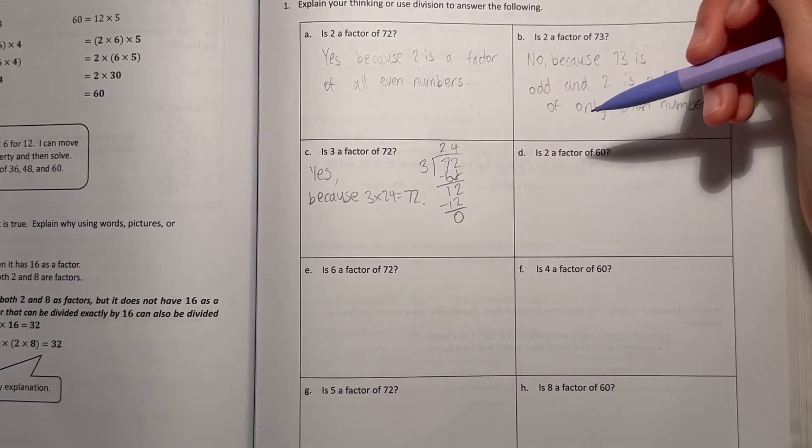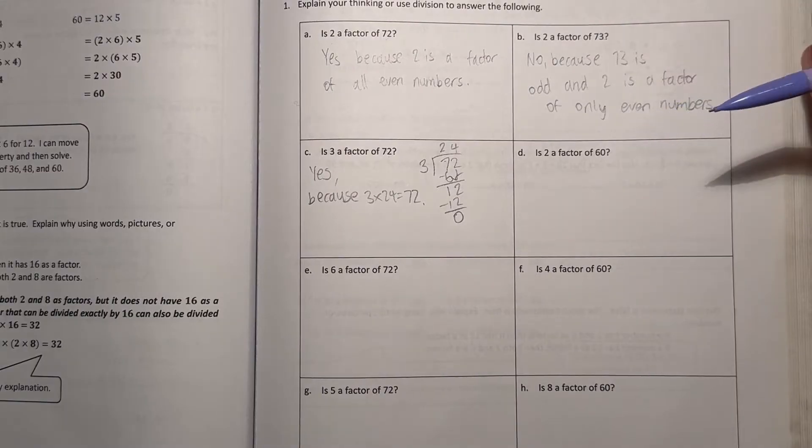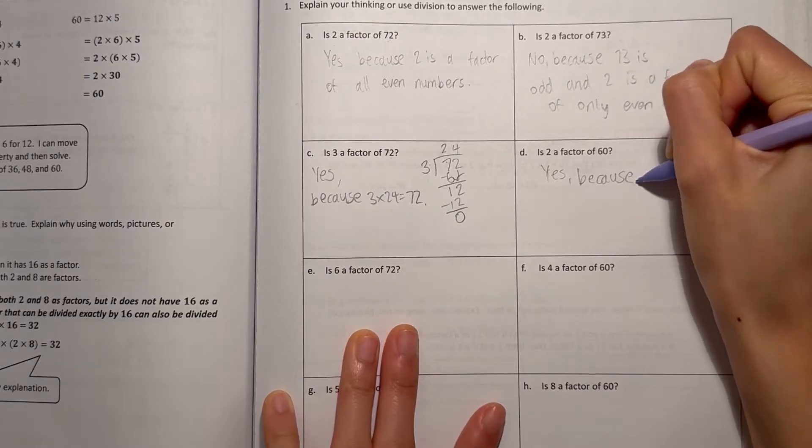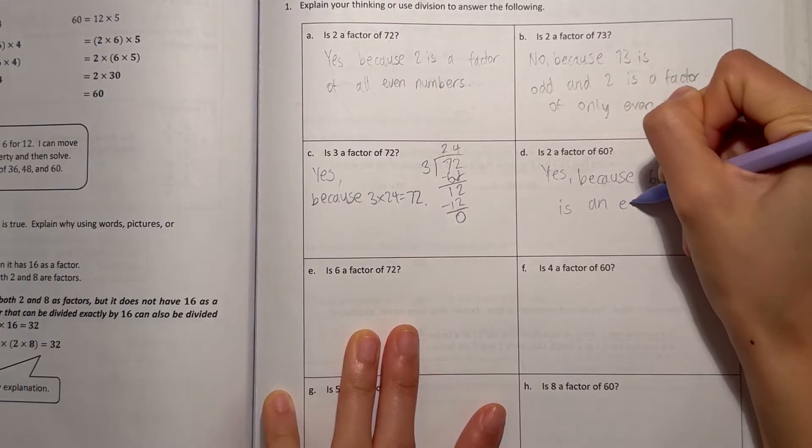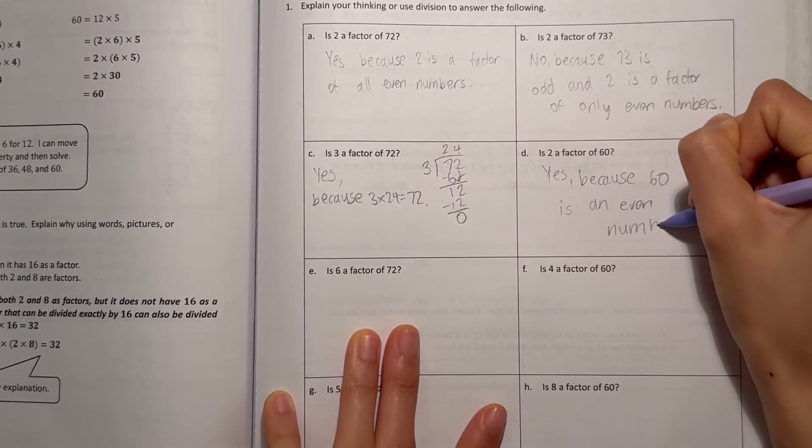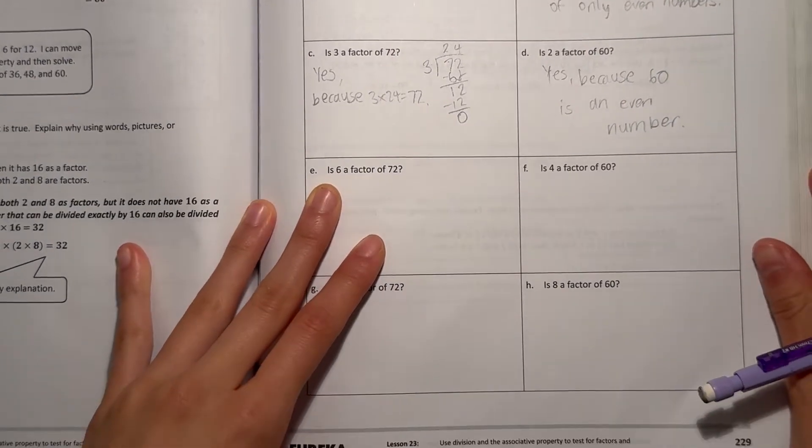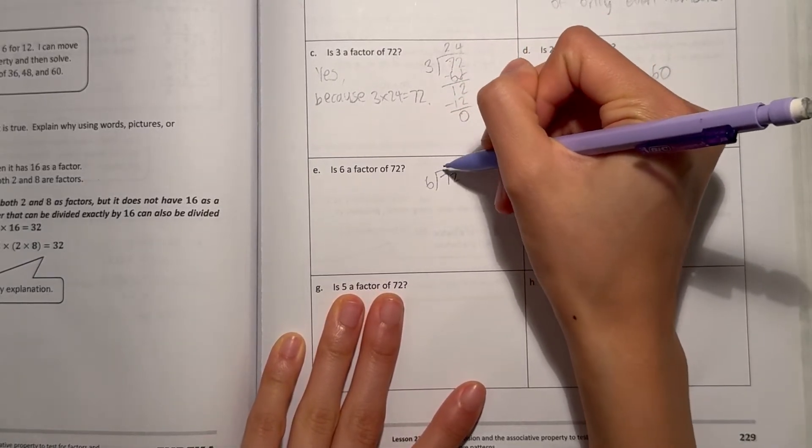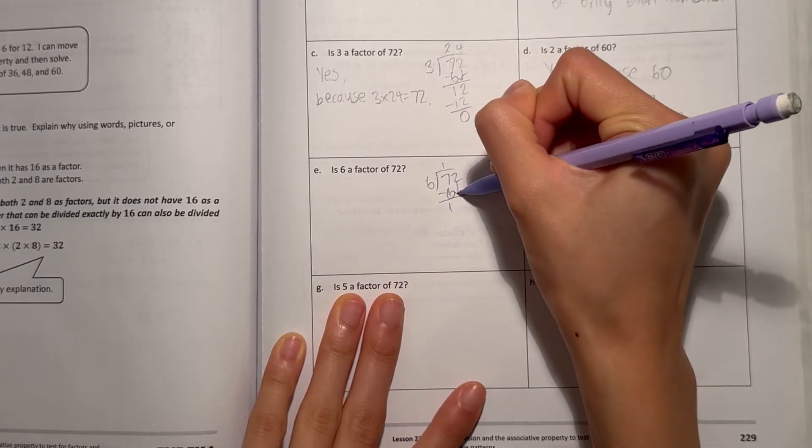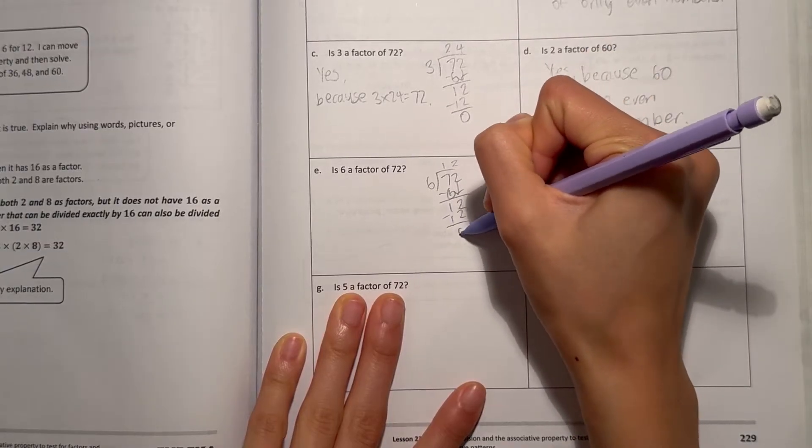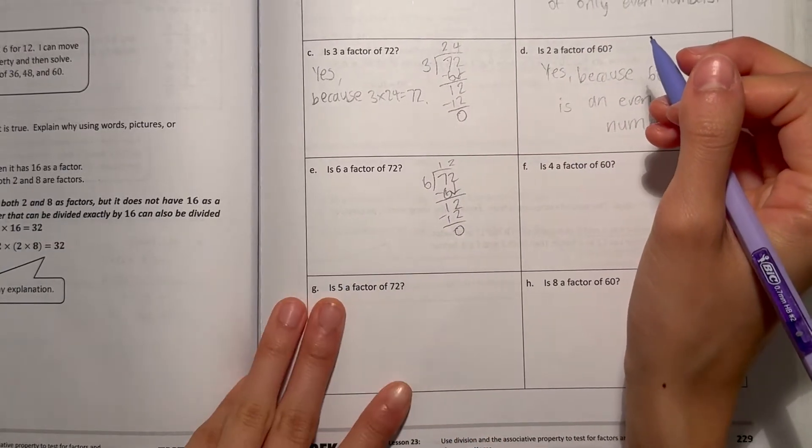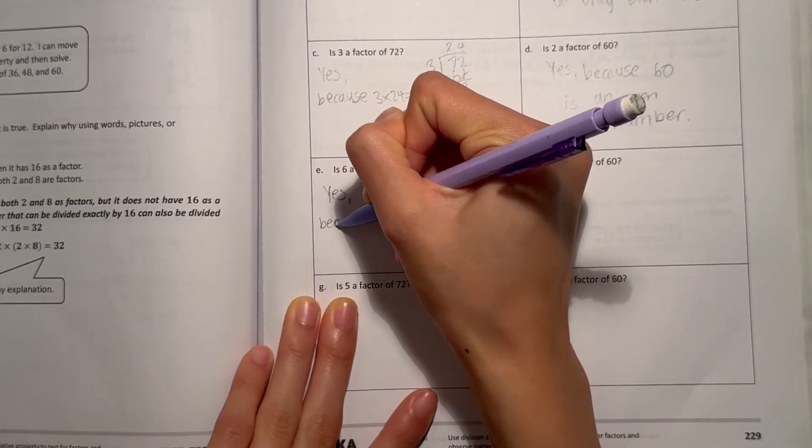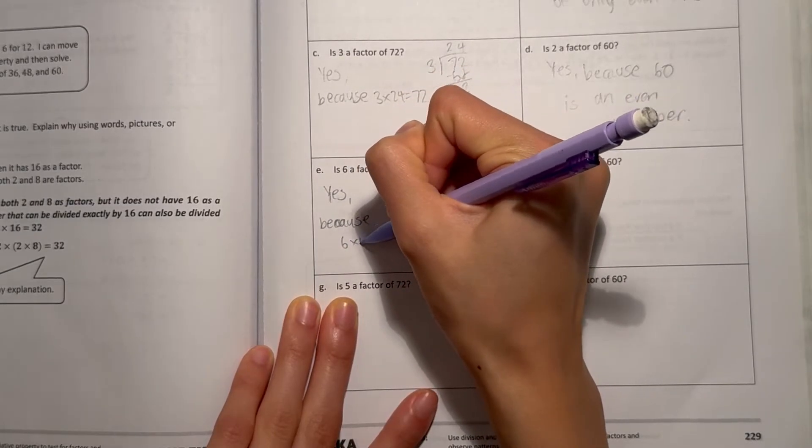D says, is 2 a factor of 60? 60 ends with a 0, so 60 is an even number. So yes, because 60 is an even number. E says, is 6 a factor of 72? Let's see, 72 divided by 6. 6 goes into 7 one time, minus 6, bring down the 2. 6 goes into 12 two times, minus 12 is 0. So we don't have a remainder, which means 6 times 12 is 72. So yes, because 6 times 12 equals 72.